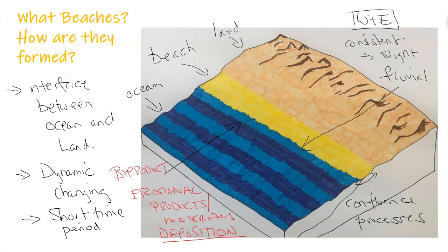The beach is basically a byproduct of erosional deposition — material that has been eroded, weathered, transported, and deposited in this location by both land and ocean, producing varying material. When you think of a beach, you think of a sandy beach — the most common, most portrayed variation. But there are also rocky beaches, pebble beaches, beaches that are very wide or very narrow, very long or very short, and beaches that change daily or seasonally between summer and winter.